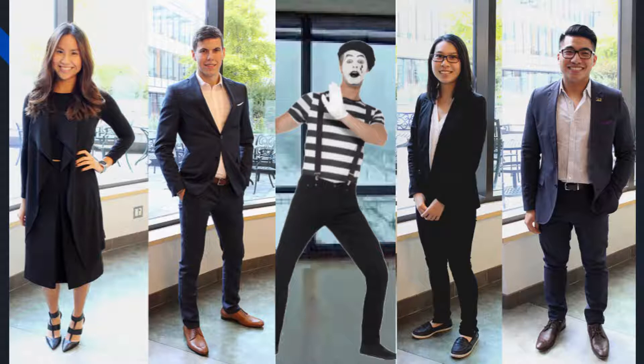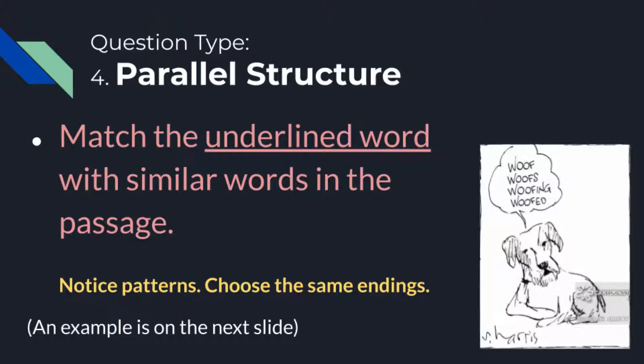So with all those examples out of the way, the actual skill that we're covering today is called parallel structure. So in your notes, make a nice big title for section four — four is parallel structure, also called parallelism. This is a skill that many of you have probably already covered in English class, even if you don't remember the name. The way this skill works is we are trying to match underlined words in the ACT with similar words in the passage. What we're doing is noticing patterns in our language, and choosing the same kinds of words or the same endings of words to match that pattern.